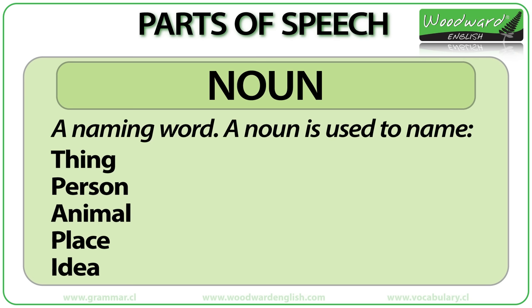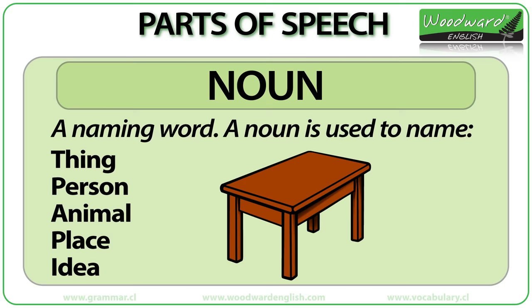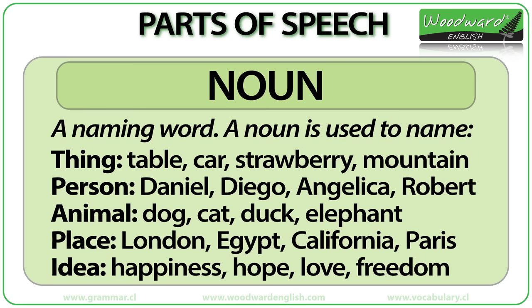Now let's look at the eight main parts of speech in English. A noun is a naming word — it is used to name a thing, a person, an animal, a place, or an idea. For example, we can name things: this is a table. What is the name of this thing? It is a table. Table is the name of this thing, so table is a noun.